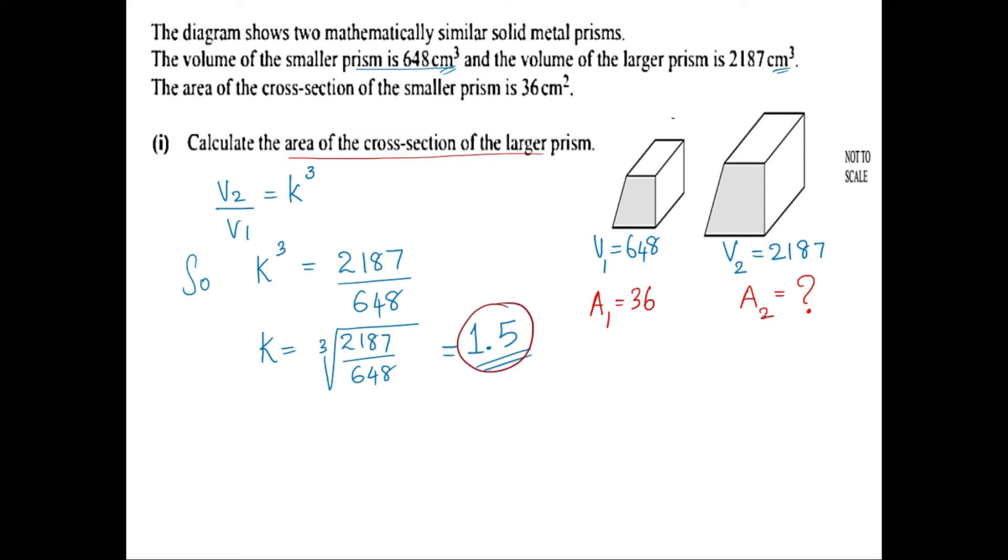Now to find the area of the larger prism A2, I know A2 over A1 equals k squared. Substituting the data, A2 over 36 equals 1.5 squared. Rearranging, A2 equals 36 times 1.5 squared, which gives 81. So the area of the larger prism is 81 cm².